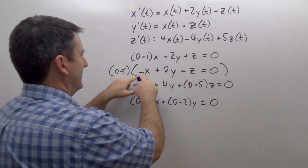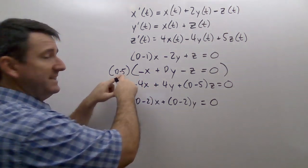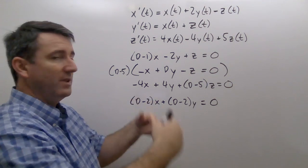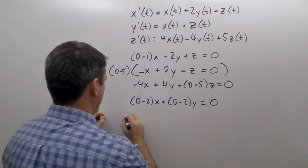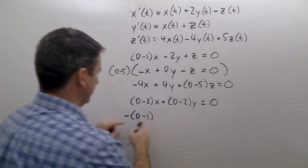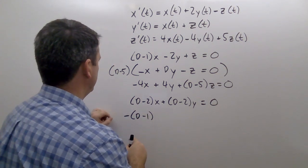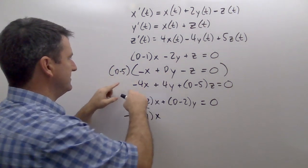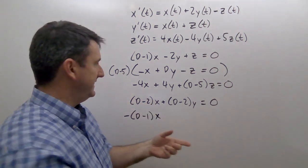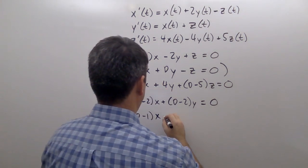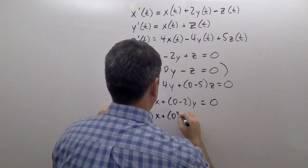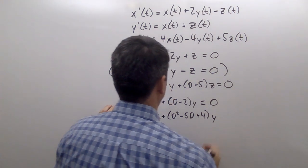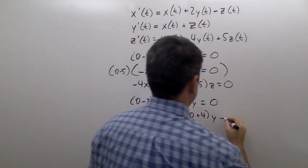That way we get negative (D minus 5)z plus (D minus 5)z and the z's go away. So (D minus 5) times negative 1 is negative D plus 5, minus 4 gives negative D plus 1, which we write as negative (D minus 1) times x. And (D minus 5) times D gives D squared minus 5D, plus 4y, so (D squared minus 5D plus 4) times y equals 0.